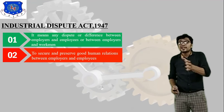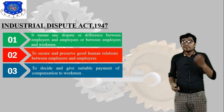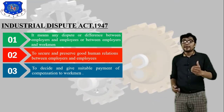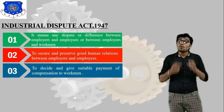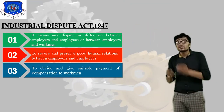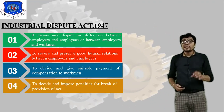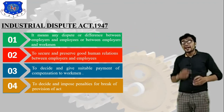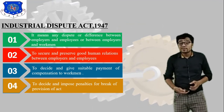The goal of Industrial Dispute Act 1947 is to decide and give suitable payment of compensation to workers — related to wage incentive plans, of which we have already completed five types. Number two is to decide and impose penalties for breach of provision of the act, related to the organization.